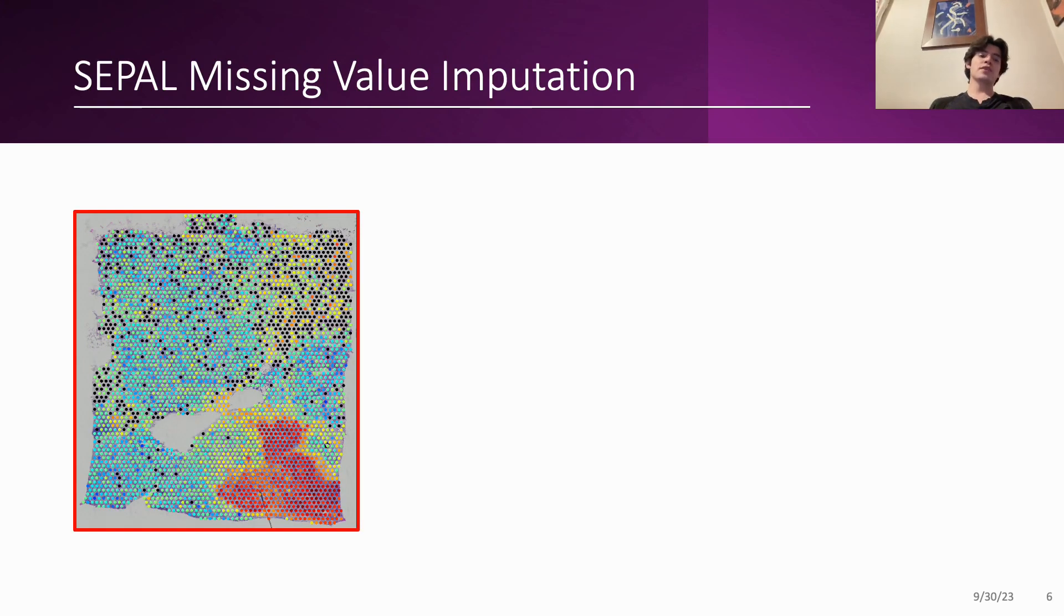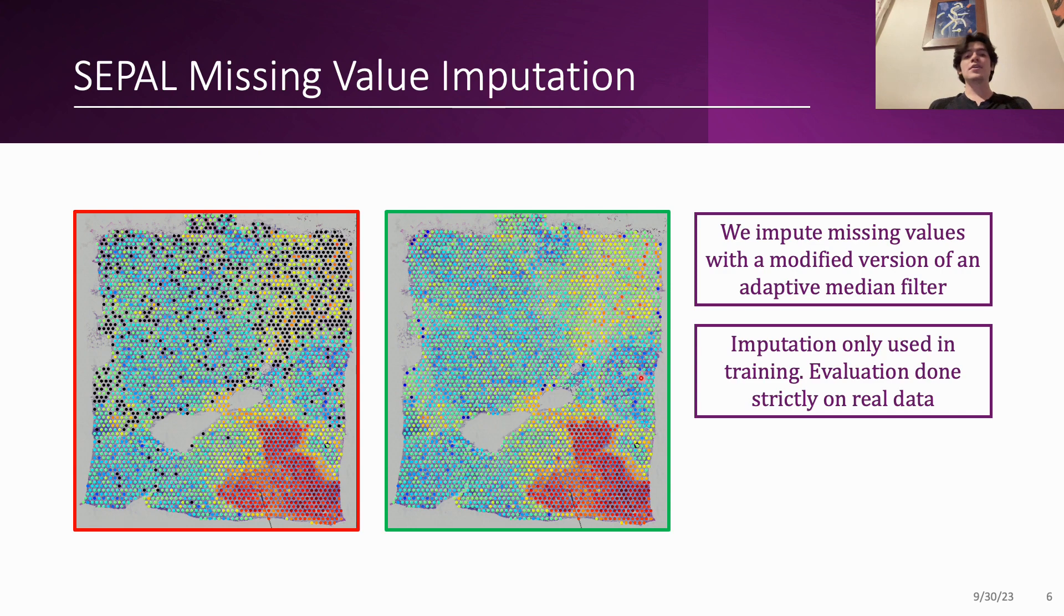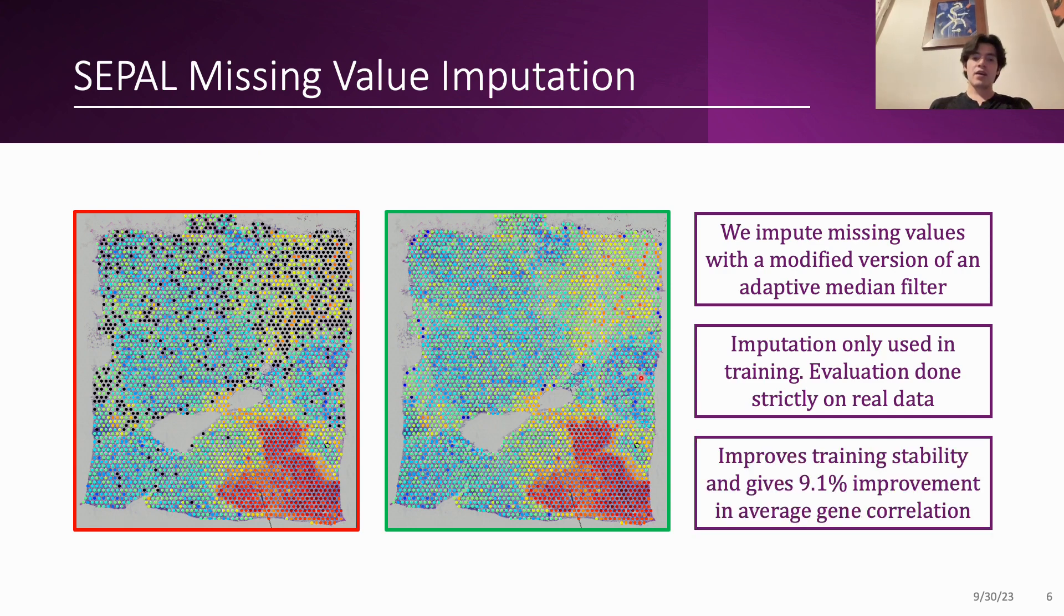Another part of our proposal is to impute missing values in training data. So this is a real sample from the dataset and this is the sample after we preprocessed it using an adaptive median filter and this imputation is only done during training and the evaluation is made strictly on real data. However, this improves training stability and it gives an approximately 10% improvement in gene expression correlation in test data.